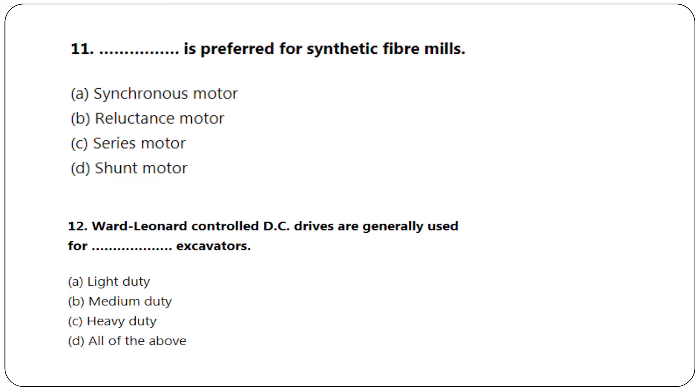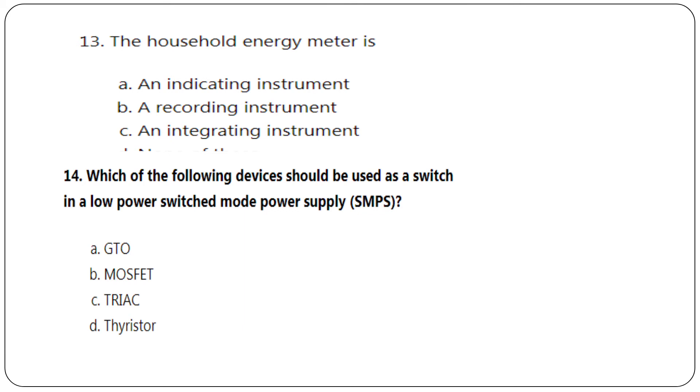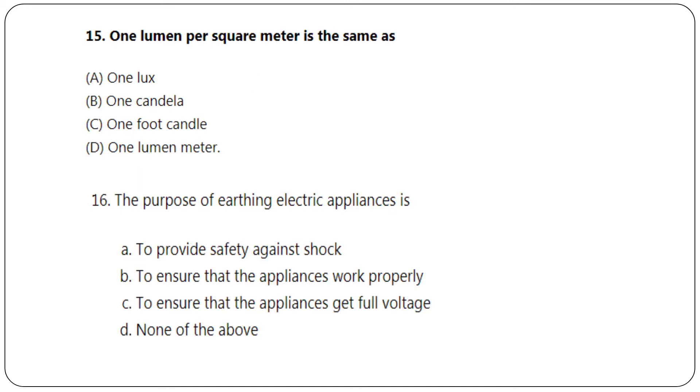Reluctance motor is used for synthetic fiber mills. Ward-Leonard controlled DC drives are generally used for heavy duty excavators. The 13th question: household energy meters are integrating instruments. Which of the following devices should be used as a switch in a low power switched mode power supply SMPS? The answer is option B, MOSFET.